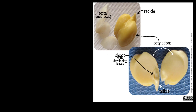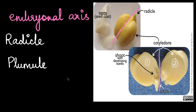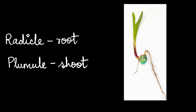Within the seed coat we have the embryo, which consists of the embryonal axis and two cotyledons. Cotyledons are often fleshy and they have reserved food material which is used up during the germination process. At the two ends of the embryonal axis we have the radicle and the plumule. The radicle develops into the root while the plumule develops into the shoot. This can be seen better in this depiction of a germinating seed.